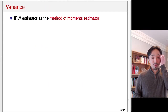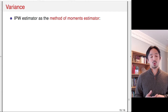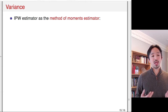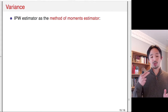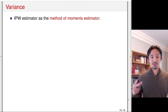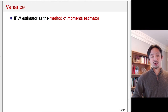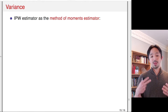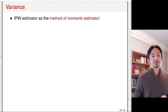What about variance? One nice thing about the IPW weighting formulation is that we can think of the IPW estimator as a method of moments estimator. The method of moments estimator works by specifying moment conditions and solving them to obtain parameter estimates — a very general and popular methodology in econometrics. If you can write the estimator as a method of moments estimator, all the asymptotic properties are readily available.